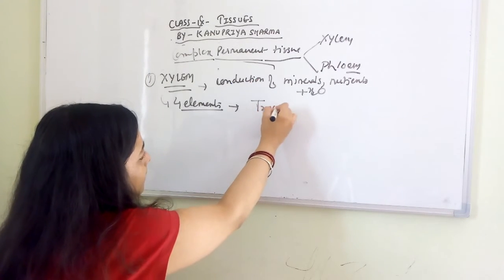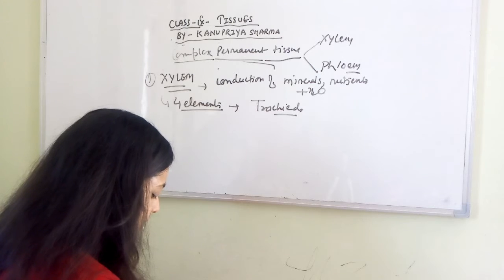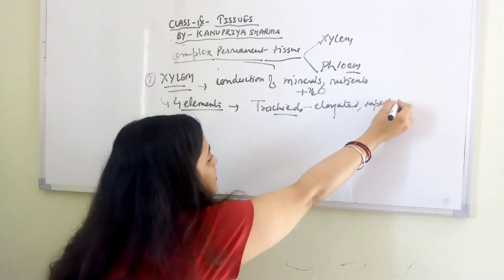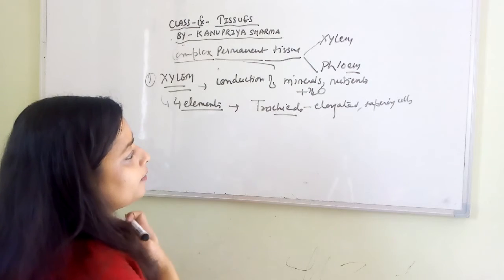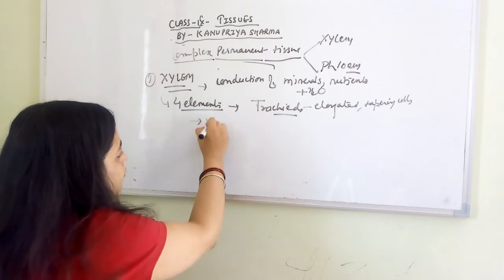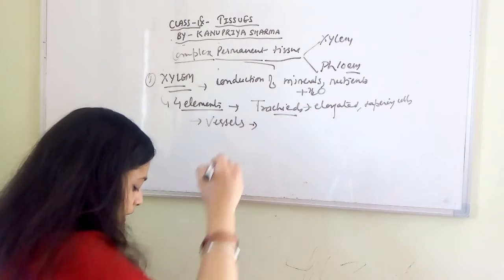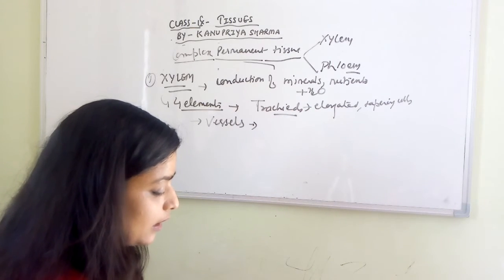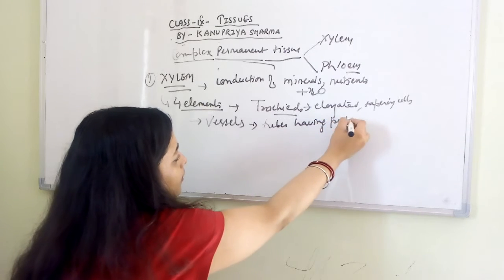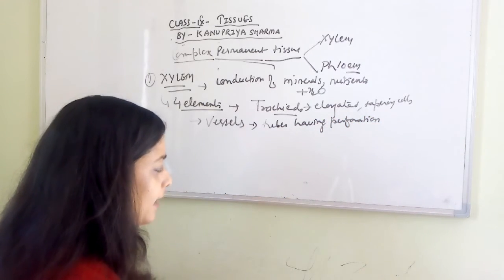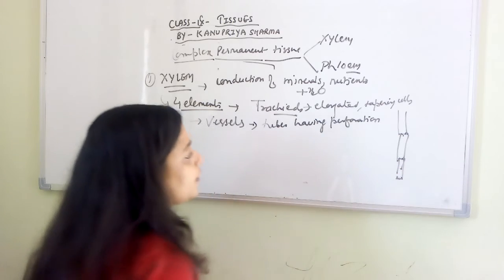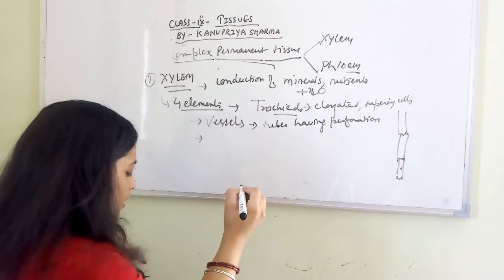The first element of xylem is tracheids — elongated tapering cells forming a tube-like structure, mainly involved in the conduction of water and minerals. The second element is xylem vessels, which have tubes with perforations — pores in them — forming a pipeline structure for the conduction of minerals and water.